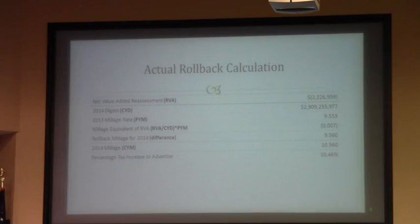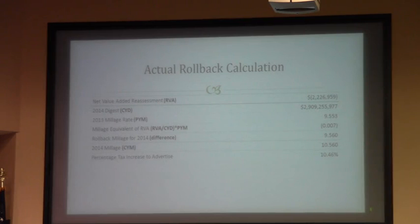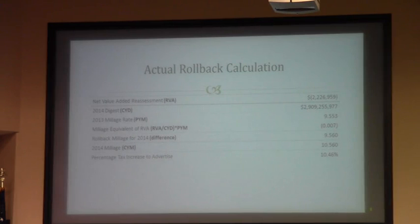For the actual rollback calculation, the net value added reassessment is a negative $2.26 million. The digest is $2.9 billion and the prior year millage was $9.553. So the millage equivalent of the net value added reassessment is a negative $0.007. Your rollback millage for 2014 would be $9.56. You are changing it to $10.56, so you have to advertise a 10.46% tax increase.